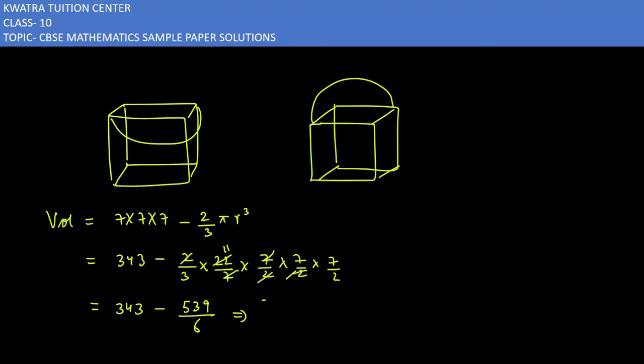Taking LCM you will get the final value as 1519 over 6 cm³. This is for first solid.